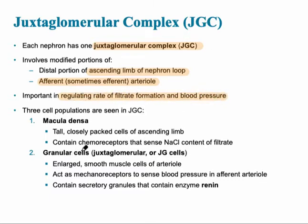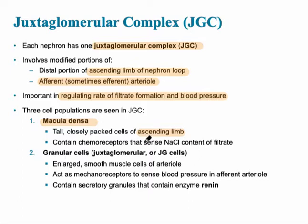The specific cells found within this juxtaglomerular complex include a group called the macula densa. These are tall, closely packed cells of the ascending limb, and also sometimes the descending limb. Their job is to sense the salt content of the filtrate.